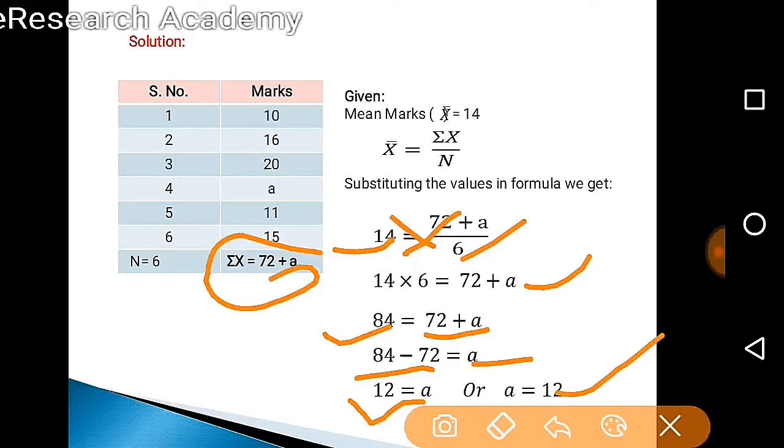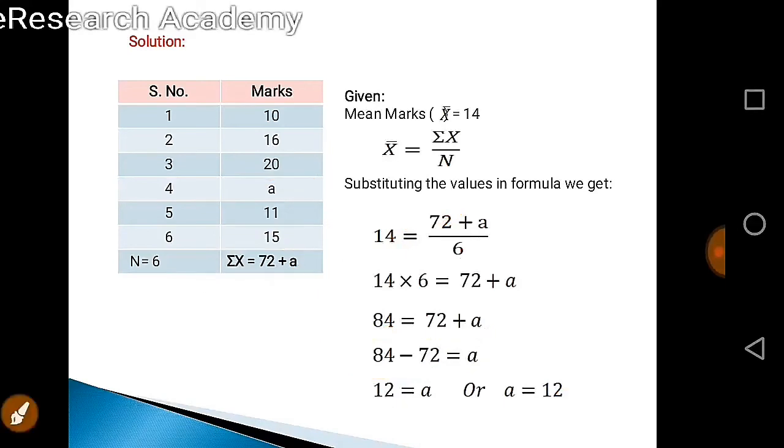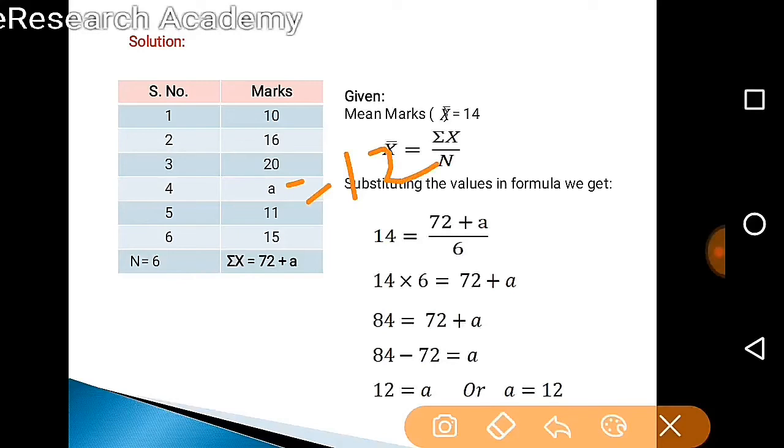A equals 12, so our missing frequency here will be 12. By this way we find the missing frequency in an individual series when we are given the mean marks.